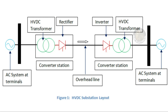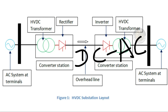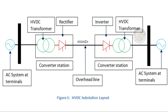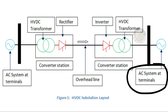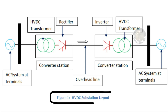So the power of AC is converted. DC and AC are converted through the HVDC transformer. This is the AC power system terminals. This is the basic concept of HVDC.